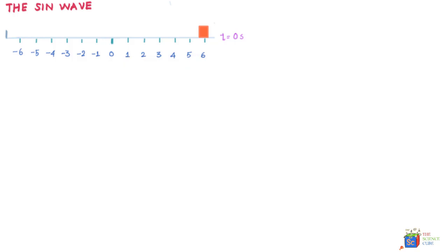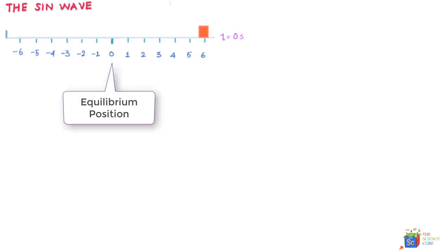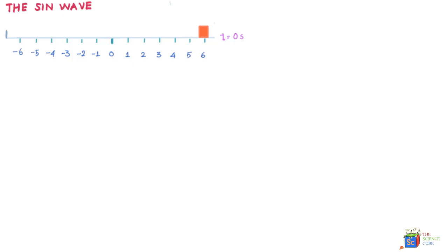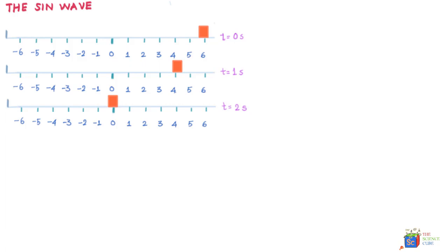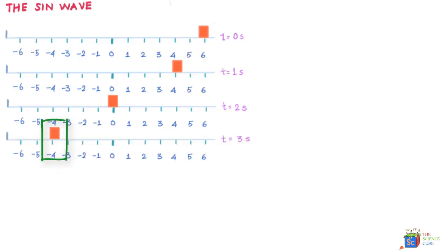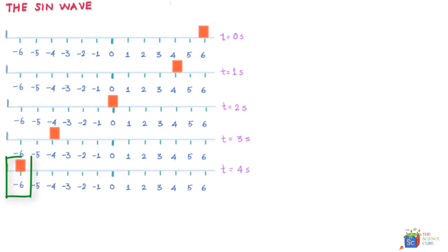The displacement X of the block was measured relative to the equilibrium position. At time t = 0, its position is six meters. At t = 1 second, its position was found to be 4.24 meters. At t = 2 seconds, its position was X = 0 meters. At t = 3 seconds, X was minus 4.25 meters. At t = 4 seconds, X was found to be minus six meters — it had moved to the extreme left.